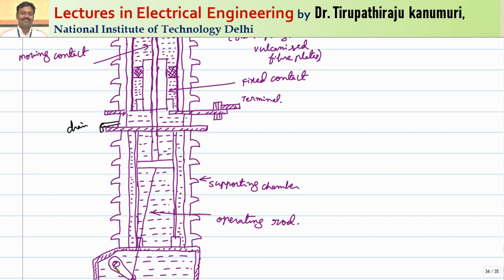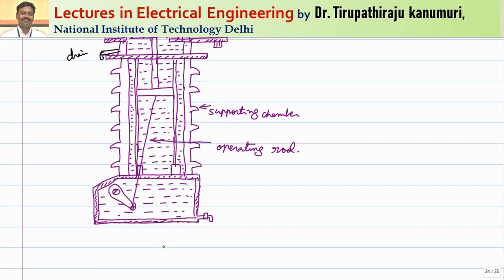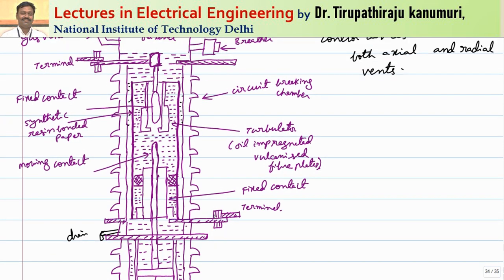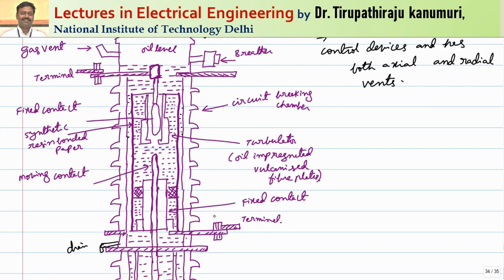On the lower side there is a third chamber called the supporting chamber. The supporting chamber is completely isolated from the upper chamber and is also filled with oil. Here the purpose of the oil is only to provide insulation to the moving parts — the operating rod, lever, and other metal components. Since this oil is not linked to the upper chamber, it does not need to be replaced frequently. A drain plug is provided for both the supporting chamber and the circuit breaking chamber.